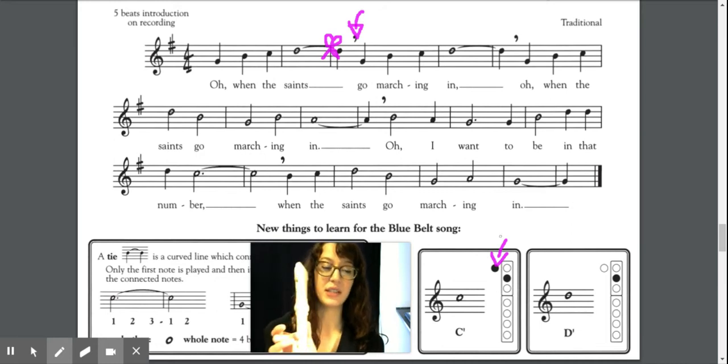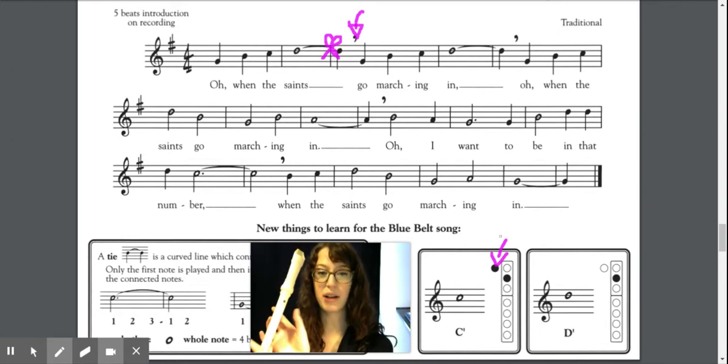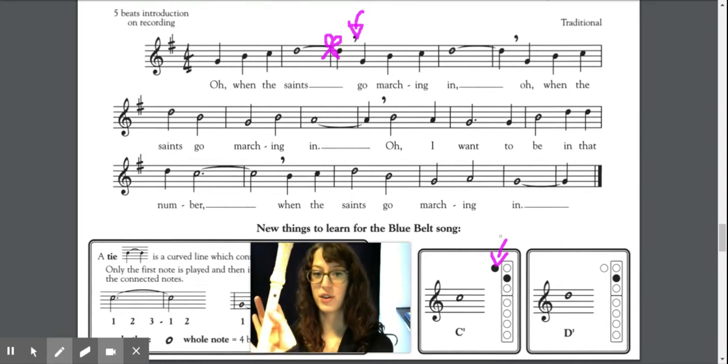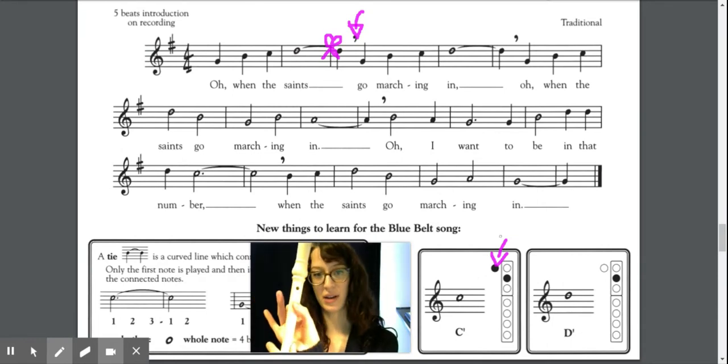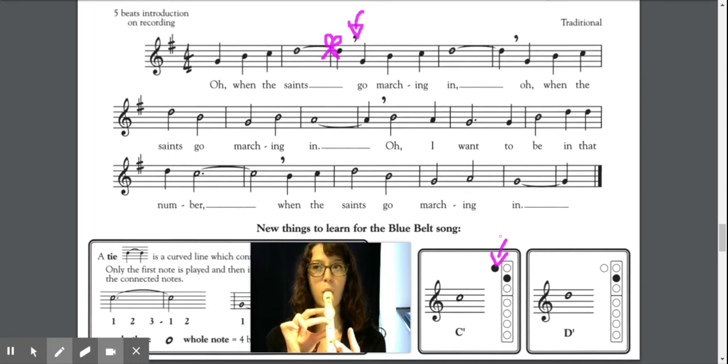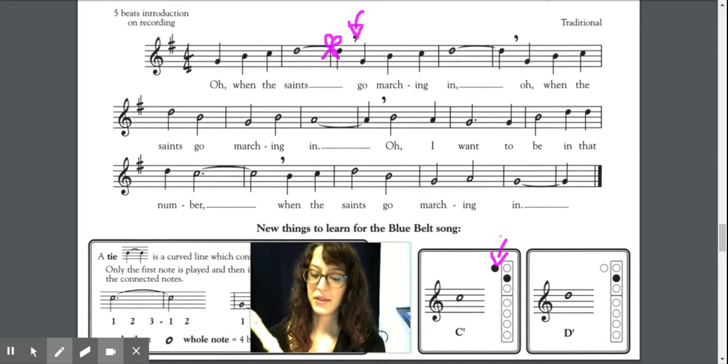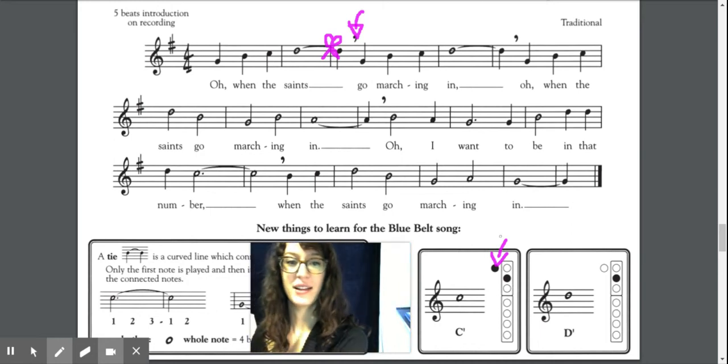Now for D, same thing. We keep that second hole covered, but this time we let go of our thumb. It's our first note where we are not covering that hole on the back. Now the higher pitches, the trickier it is to get a good sound. As soon as we blow too hard, it's bad. So we want to blow really gently.